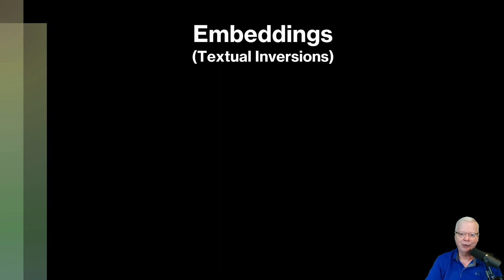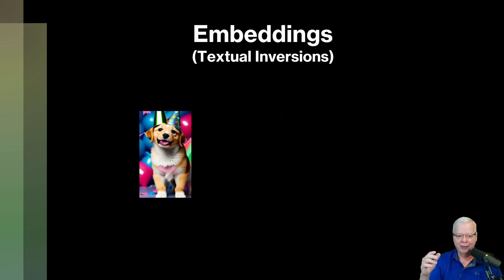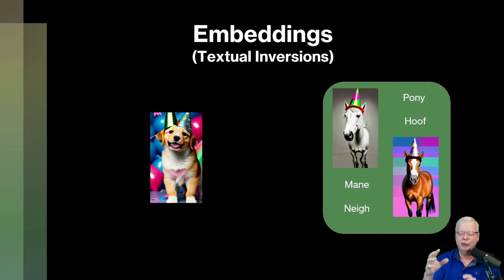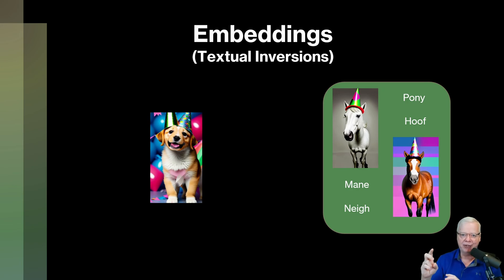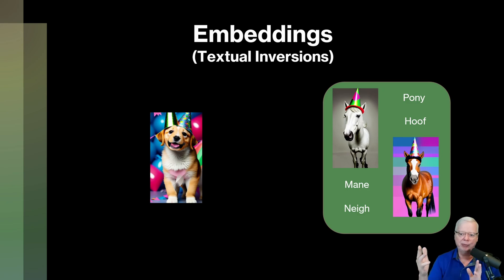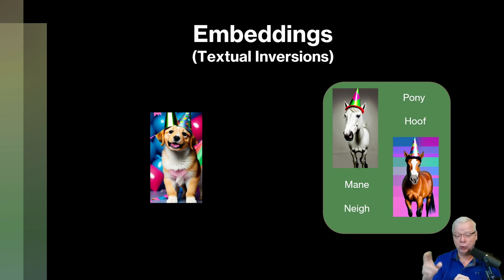Next, we'll get into embeddings, or what they're called, textual inversions. You have your model and you want to include other images to expand the model — not focus it down, but expand it, like we did with merging models. However, there's one key difference: when you're doing an embedding, you can also include keywords that aren't necessarily in your main model. Just like LoRAs, embeddings run side-by-side with the model, so you can turn them on or off and use different embeddings for greater flexibility and range of image types.